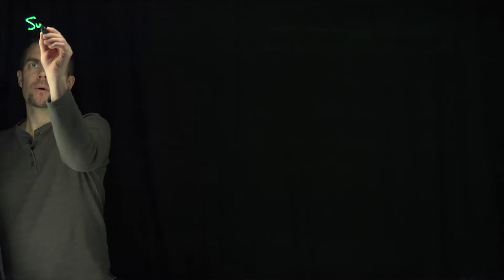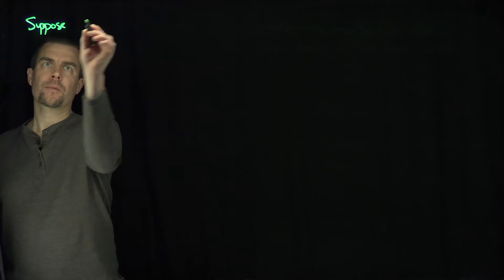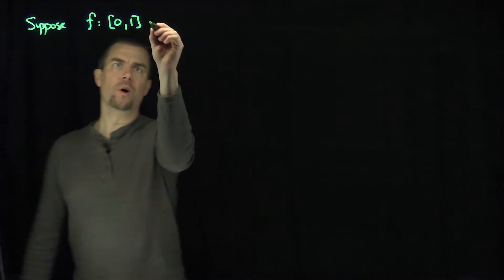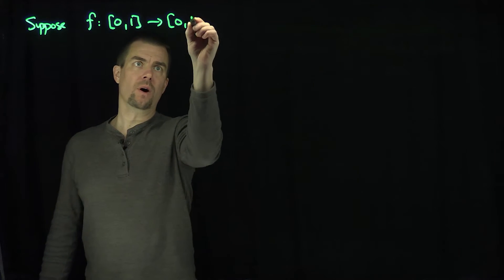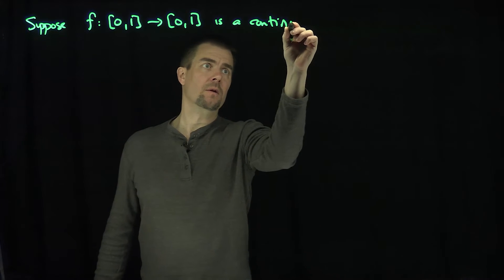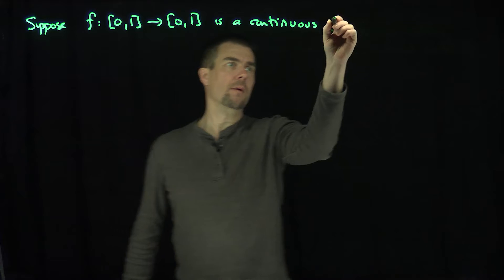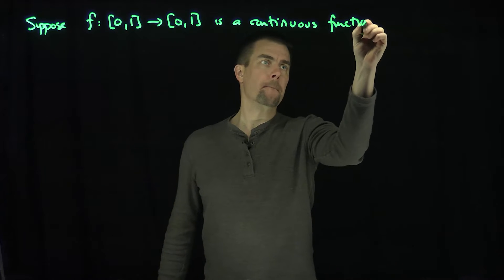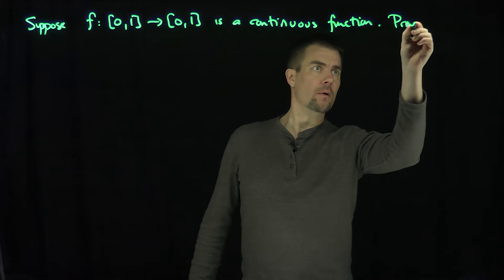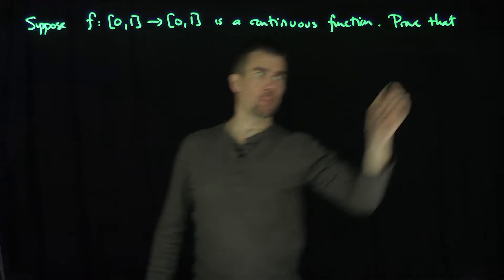Hello students. In this video we'll use the intermediate value property to prove that a function has a fixed point. Let's suppose that f is a function that maps the closed interval into the closed interval and is a continuous function. Let's prove that f has a fixed point.